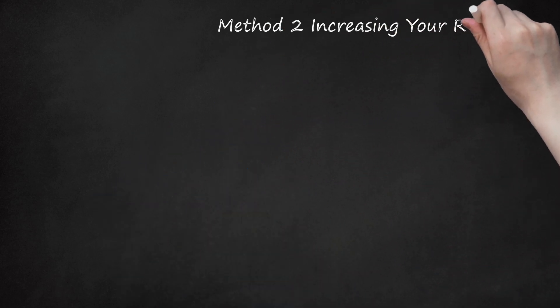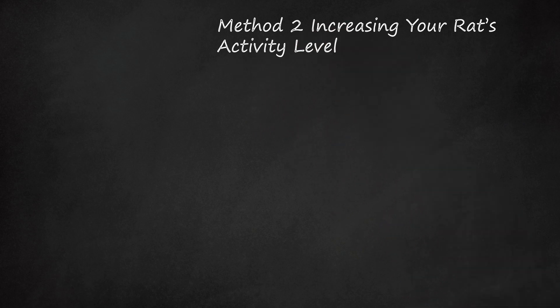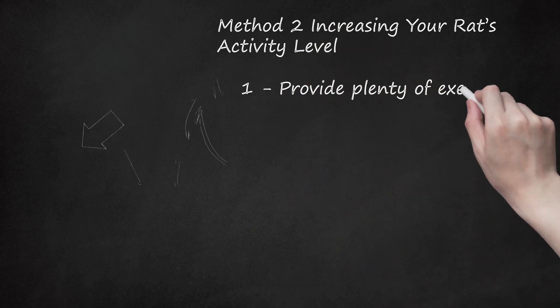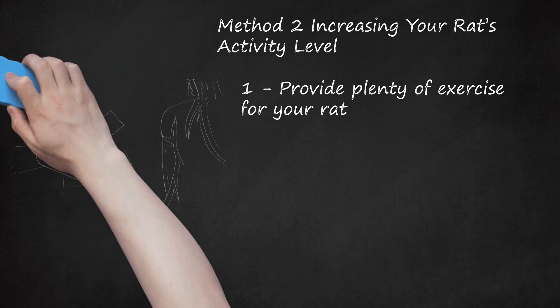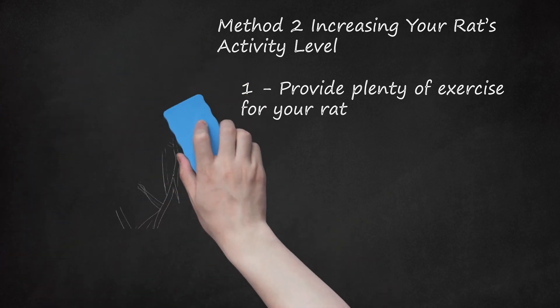Method 2: Increasing Your Rat's Activity Level. First, provide plenty of exercise for your rat. Rats are intelligent animals who need a great deal of mental stimulation and activity. If you're trying to help your rat lose weight, making sure it has plenty of activities will help it stay healthy and happy. Provide tunnels, igloos, ropes, ladders, blocks, and child or baby-safe toys for your rat to play with. Wooden gnawing blocks make great chew toys. You can also offer rawhide chew sticks or hard dog biscuits. Old soup bones or chicken bones are fine for a rat to chew on.